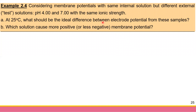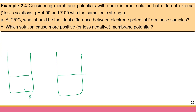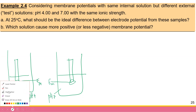Let's draw the two scenarios. You have two beakers — one with the external solution at pH 4 and one at pH 7 — and you insert a pH electrode into each. Both produce a membrane potential. The first question asks for the difference between the two membrane potential values.